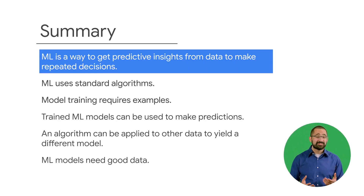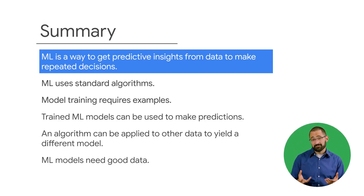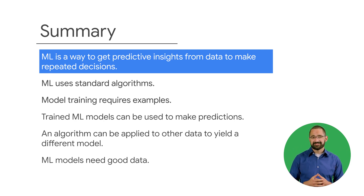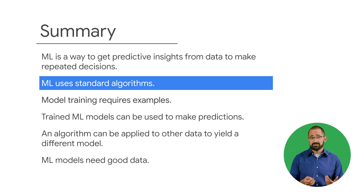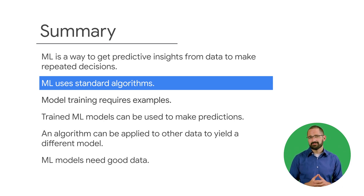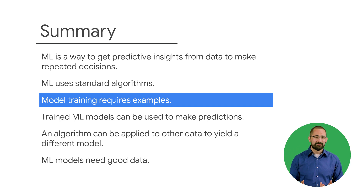Machine learning is a way to use standard algorithms to derive predictive insights from data to make repeated decisions. The other part of machine learning's definition is around those standard algorithms. ML uses these standard algorithms to solve seemingly different problems, whatever the domain.